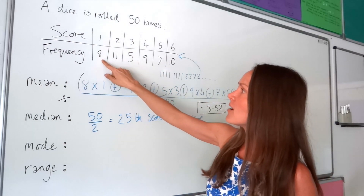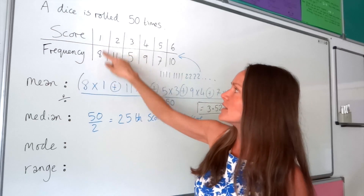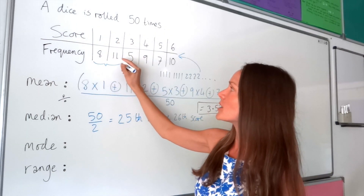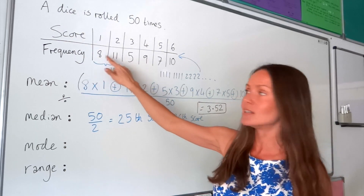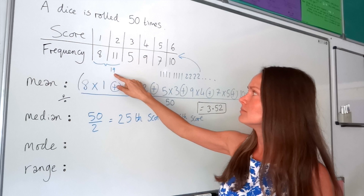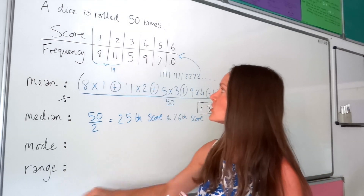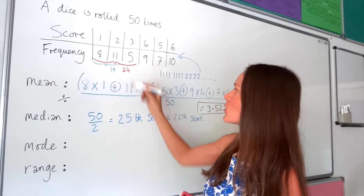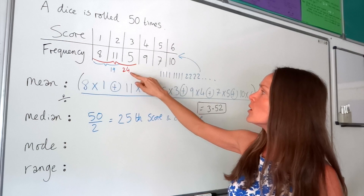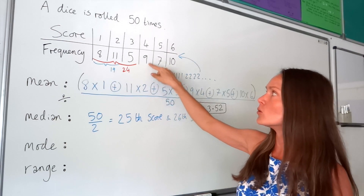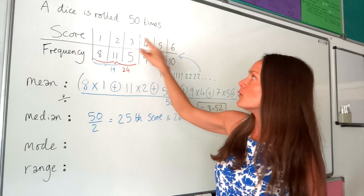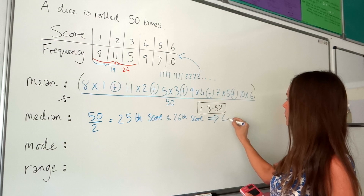There are eight number ones, so the first eight scores are in that column. Then eleven number twos, so the next eleven scores are there — giving us 19 scores so far. Adding the five number threes gives 24. So the first 24 scores fall into those columns, and then the 25th through 33rd scores are all in the next column, which is the number four. So both the 25th and 26th score fall there, making the median four.